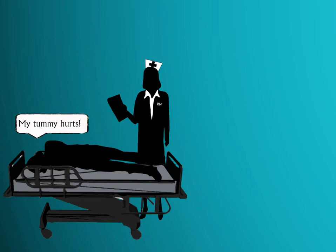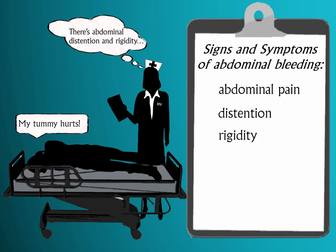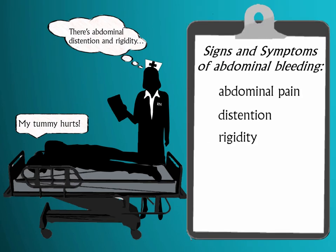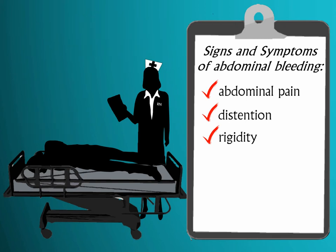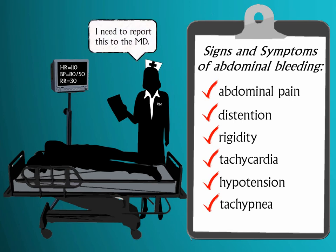Let's say you have a patient complaining of abdominal pain one hour after a liver biopsy. What do you need to do first if you note abdominal distension and rigidity upon inspection? In the previous questions, you understood that abdominal pain, distension, and rigidity could all be a symptom of internal bleeding. But as a nurse, you need to confirm your suspicion with additional data, like vital signs, to identify tachycardia, hypotension, and tachypnea.